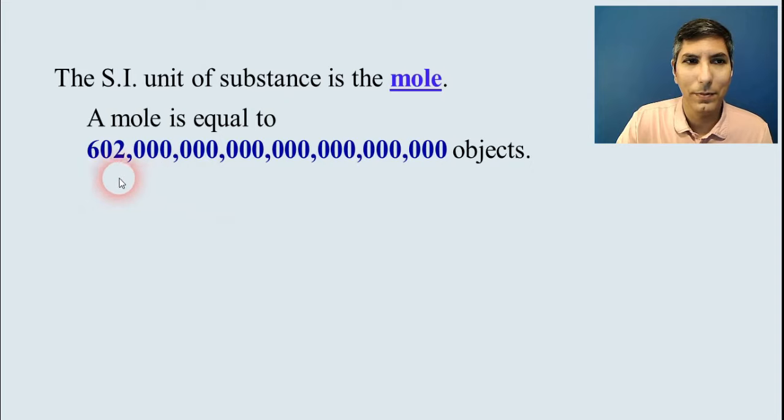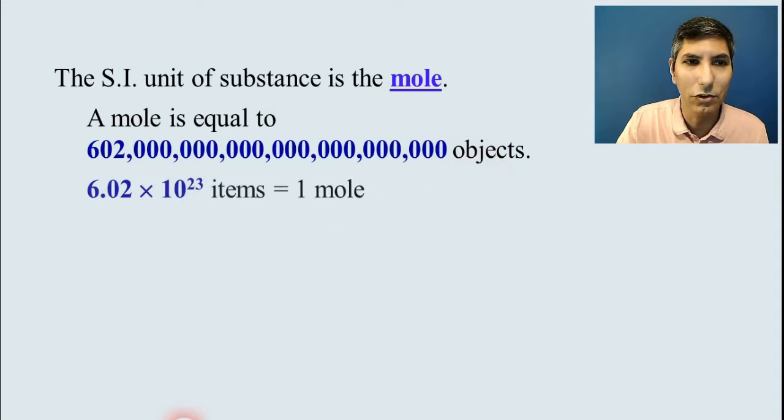That number, as you might read, is 600 to 6-tillion. Of course, it's not practical to write that number out most of the time, so we usually use scientific notation, and we say it's about 6.022 times 10 to the 23rd items or objects. That's how many things there are in a mole.